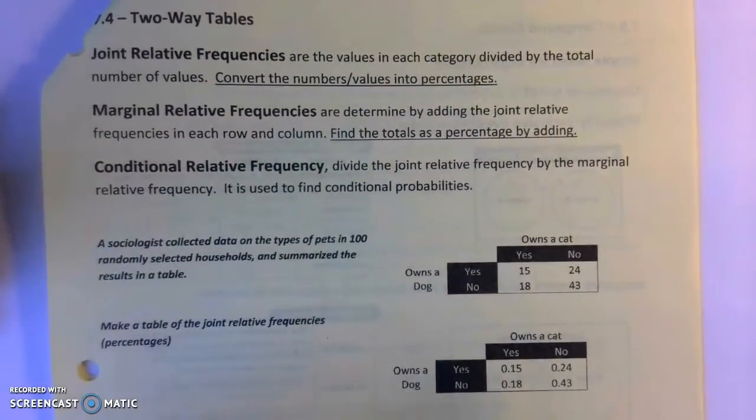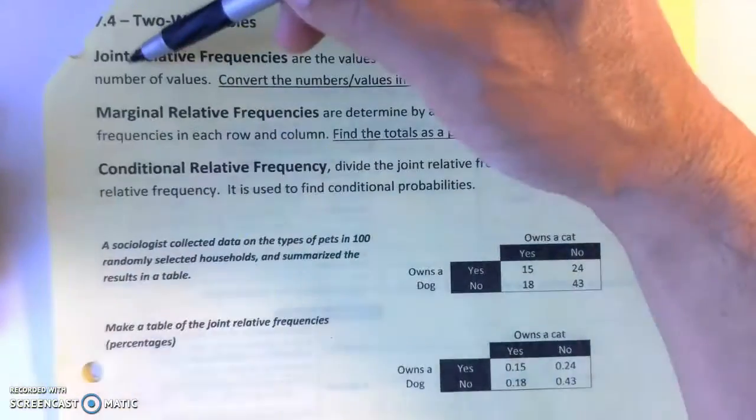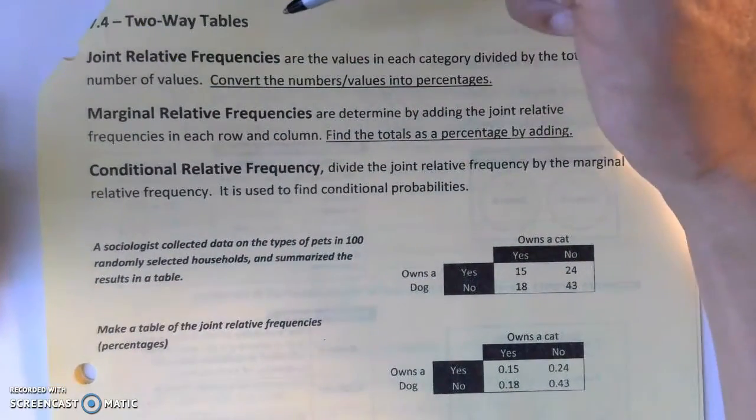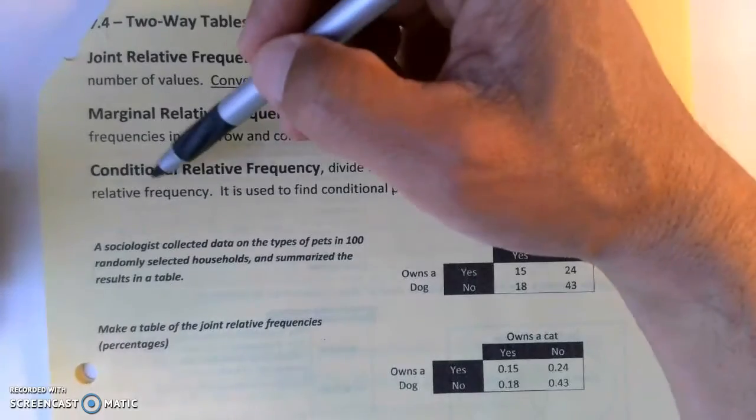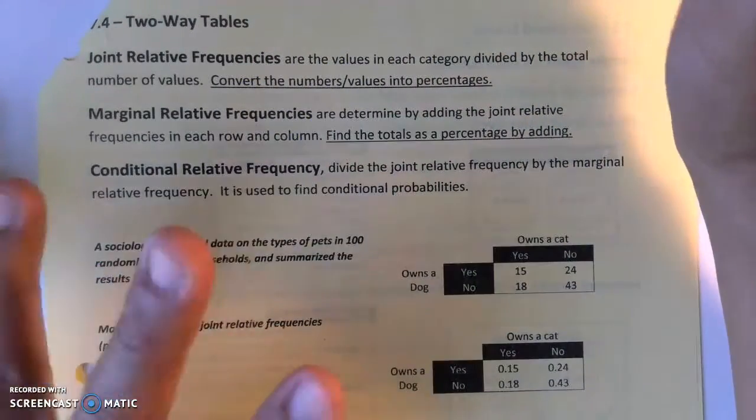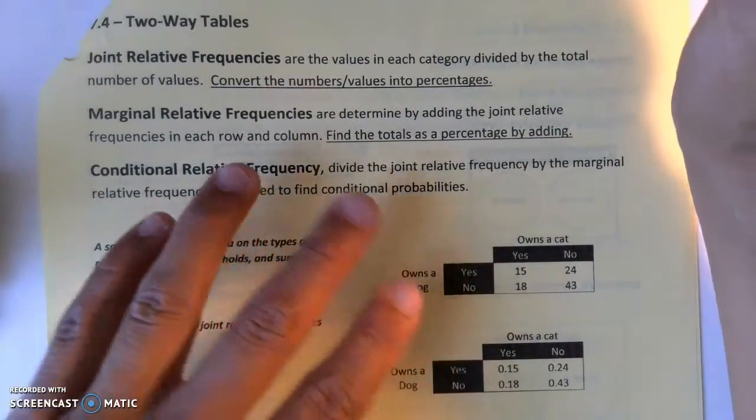I'm going to read the main vocabulary: joint relative frequencies, marginal relative frequencies, and conditional relative frequency. Again, the vocabulary is not that important. We're just going to fill in these charts.